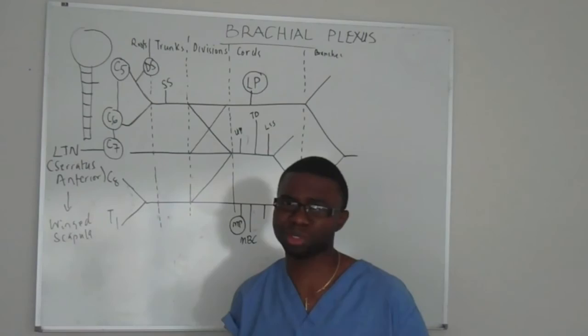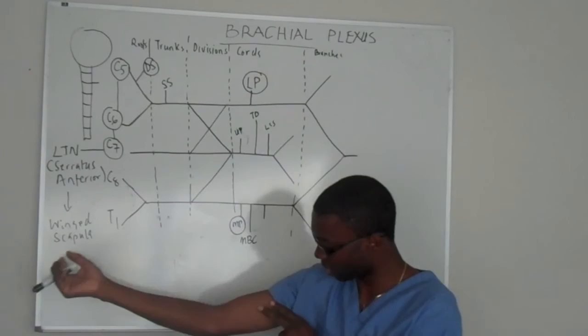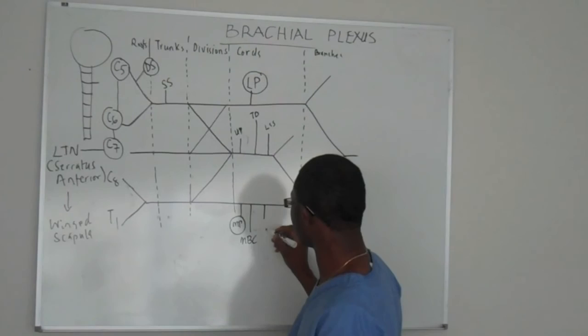In medicine, we have to use proper terminology — we can't just say smaller arm or forearm. So the skin here, you can feel it, right? It's innervated by the medial aspect of your arm — the medial brachial cutaneous nerve.